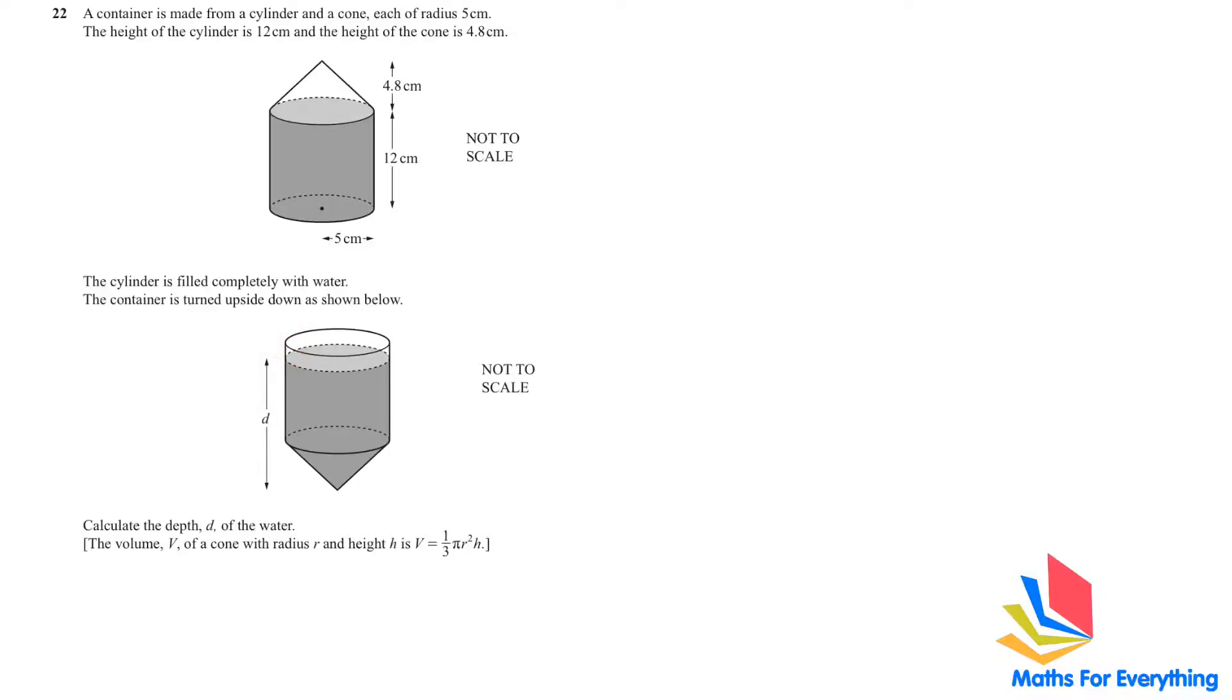First, let's find the volume of the cylinder. To find the volume of the cylinder we use the formula pi r square h. So pi into 5 square into height which is 12 will give us 300 pi. Do not write it as a decimal, leave it as pi. To find the volume of the cone, we use the formula one third pi r square h. The radius is 5 and the height is 4.8, which gives us 40 pi. Now to find the total volume, we will have to subtract 40 pi from 300 pi, which gives us 260 pi. That is the volume of the water remaining in the cylinder.